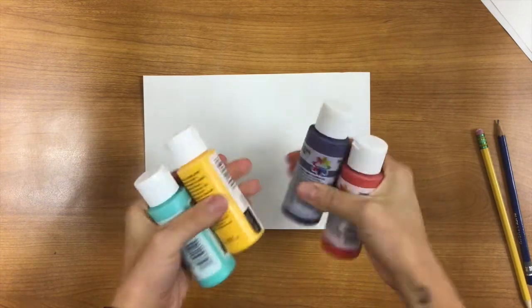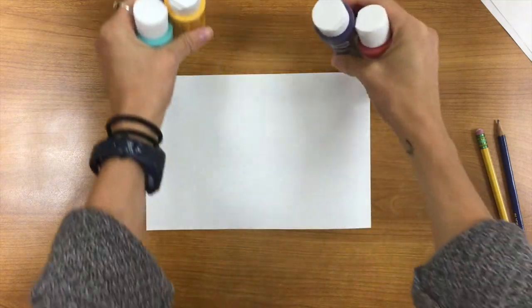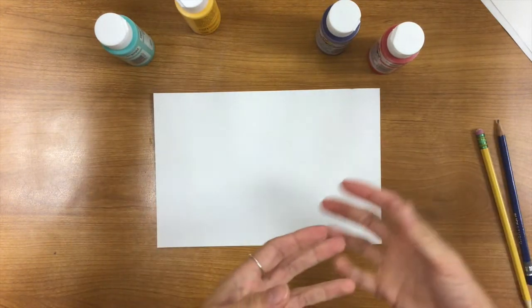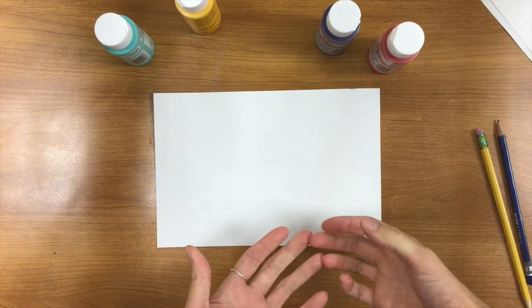Alright, so first we're going to pick out any colors. Remember you can choose one to four. Once you get past four, it kind of puts you at risk of making too many different colors blend together and then you get a boring brown.